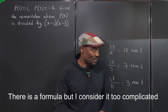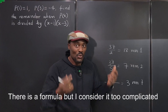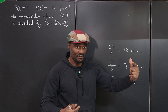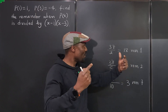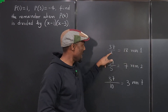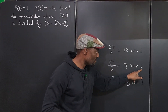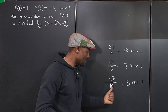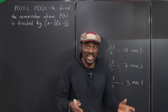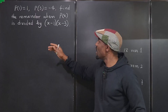So the given remainders are not sufficient information to obtain the remainder when you use the product for the division. We have to think carefully about what the remainder is supposed to be. When you divide by 2, the remainder must be less than 2. When you divide by 5, the remainder must be less than 5. When you divide by 10, the remainder must be less than 10. That's the meaning of remainder.